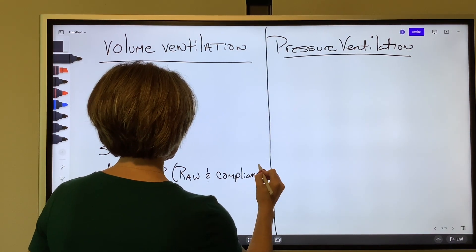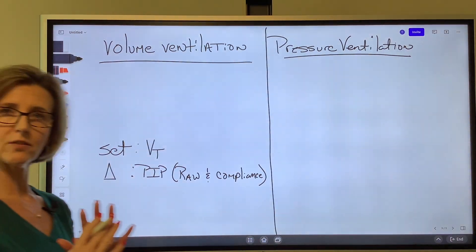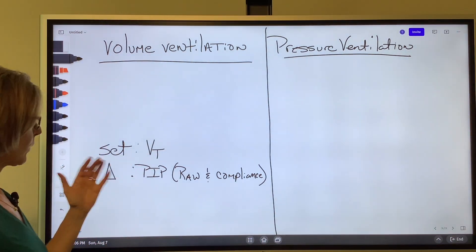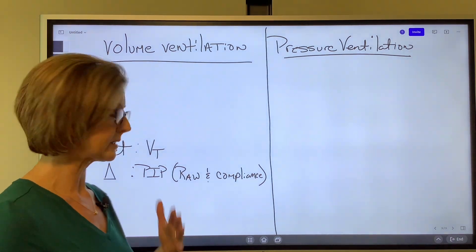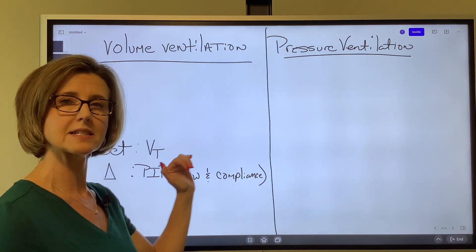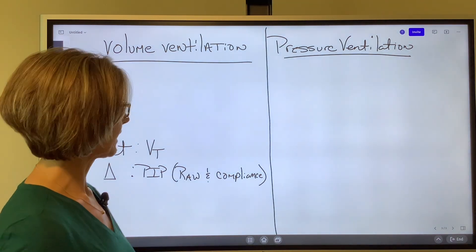Okay, so in volume ventilation, we set the tidal volume, it does not change. What does change is the peak inspiratory pressure and it will fluctuate depending on changes in airway resistance and alveolar compliance.